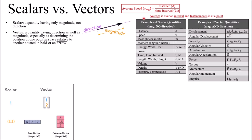A vector adds the idea of a direction. You have a magnitude, which can be the length of an arrow that you draw, and then the direction is indicated as well. You can notate this using bold font or an arrow above. Examples include displacement instead of distance, velocity instead of speed, and other quantities like force and torque — all of which have direction associated with them.